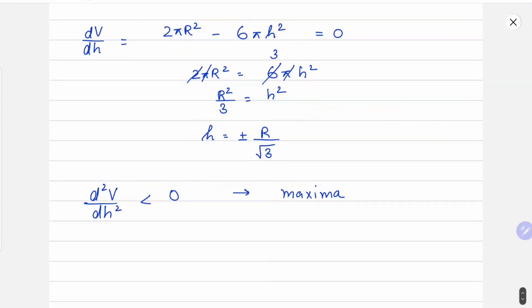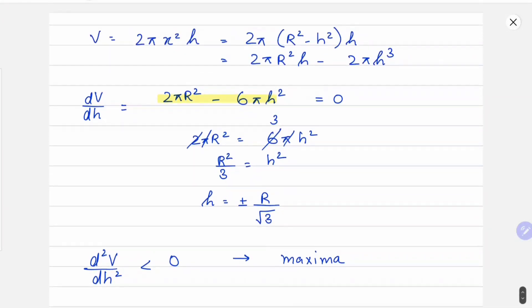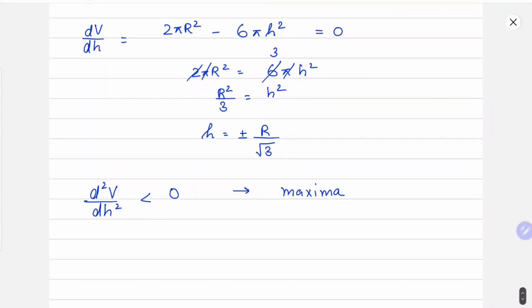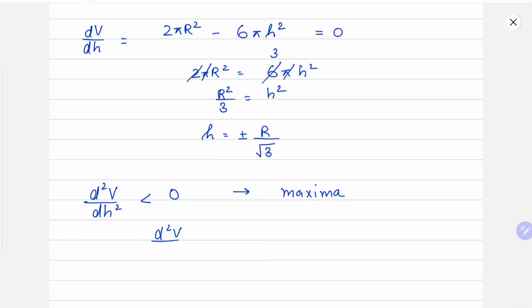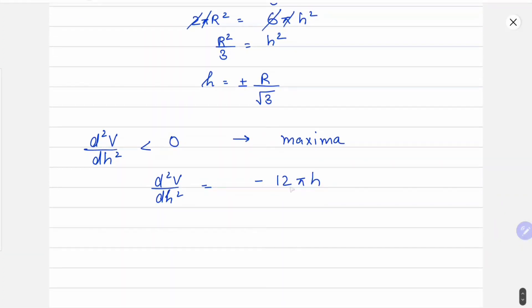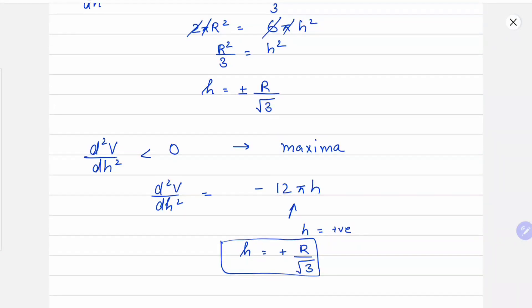So let's do it. On double differentiating this term, we get d²v/dh² equals minus 12πh. You can clearly see this will be negative if h is positive. So the value of h will be R/√3 positive one. This means volume will be maximum at h equals R/√3.